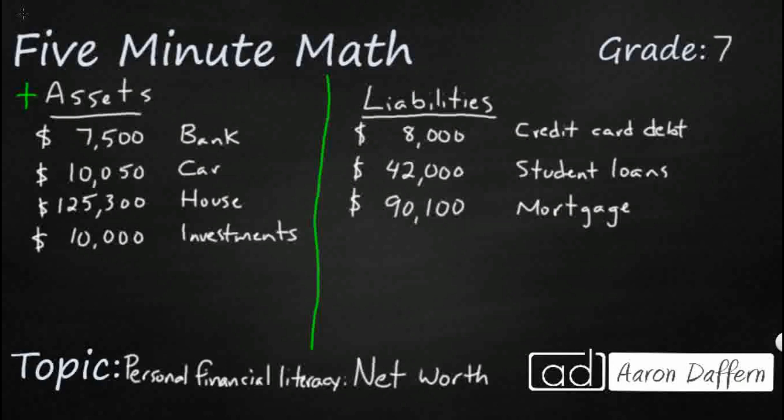So you see we've got several things here. Bank — $7,500, so that might be checking and savings. Maybe our car is worth a little bit over $10,000 if we were to sell it. Our house might be worth a little bit more than $125,000 if we sold it. And then maybe we've got $10,000 in investments.